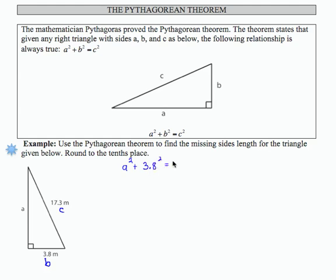equals c squared, which is 17.3 squared. Let's multiply our squares.